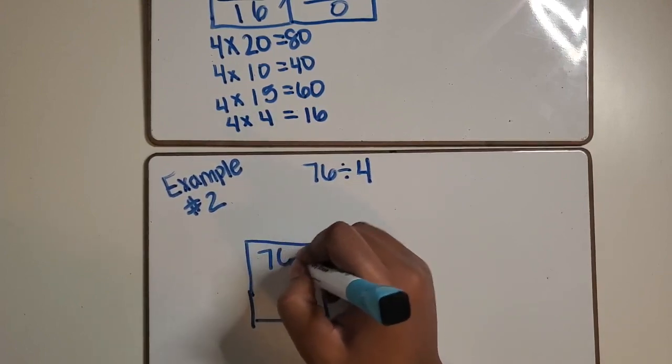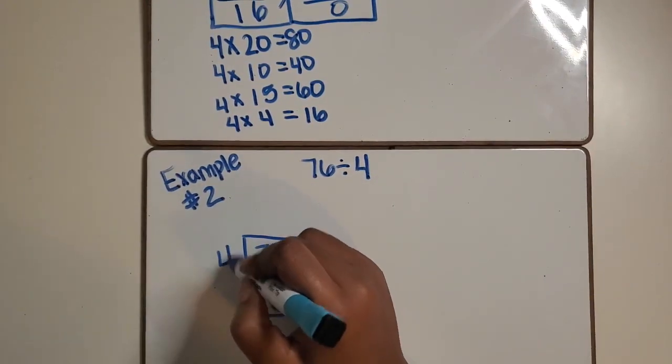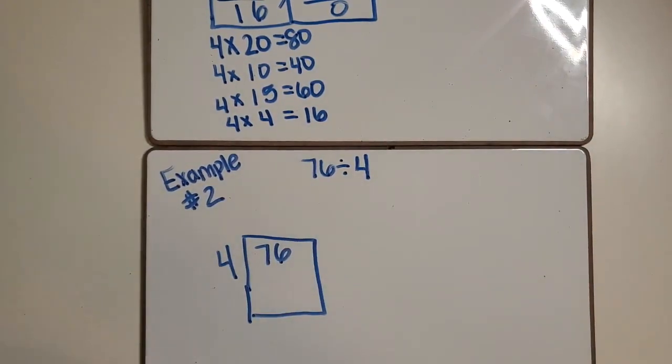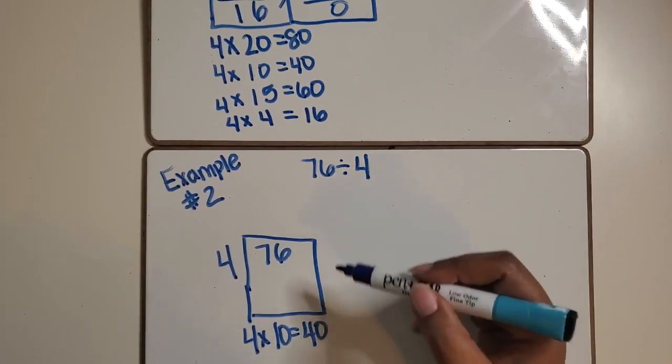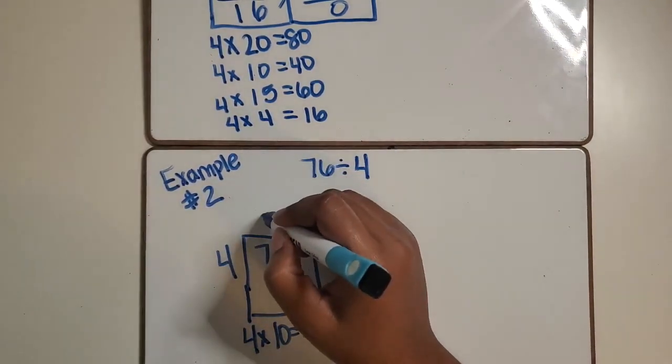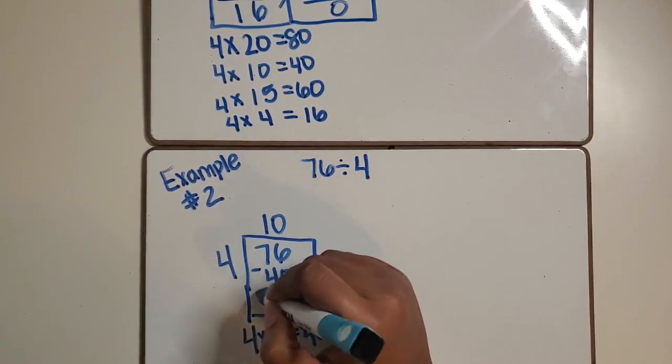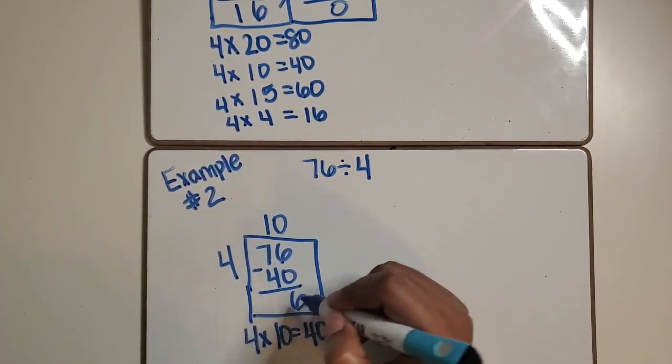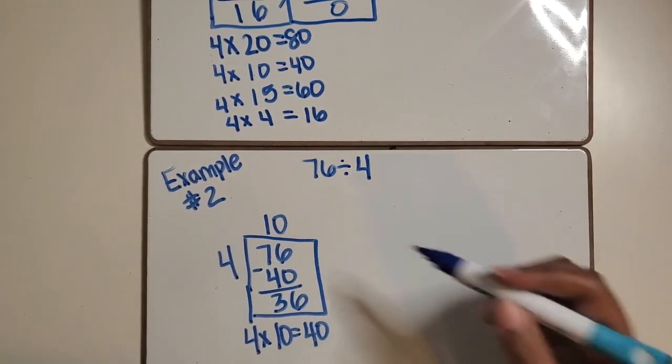So we would start again with sharing 76 among four equal groups and the 76 going in the rectangle. Using the multiplication fact of 4 times 10 equals 40, four groups of 10 is 40. We are going to subtract 40 from the 76 and it leaves us with 36 remaining.